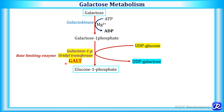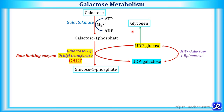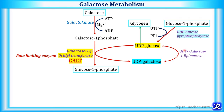GALT is the rate-limiting enzyme of this pathway. The UDP galactose formed can be epimerized to UDP glucose by UDP galactose 4-epimerase, or UDP hexose 4-epimerase. This UDP glucose can then be utilized for synthesis of glycogen in glycogenesis. Even if lactose is not taken in the diet, UDP galactose can still be synthesized from glucose 1-phosphate via UDP glucose pyrophosphorylase and UDP galactose 4-epimerase — that's why this molecule is not essential.